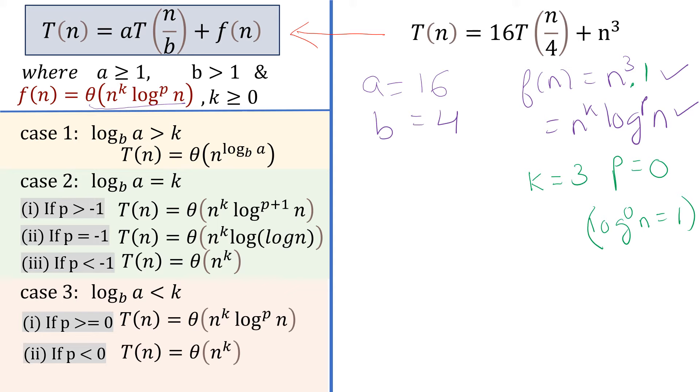Now we have a, b, k and p. Next you have to find log_b a, which is log_4 16 equals 2. Now compare log_b a and k. k is 3, log_b a is 2, therefore k is greater. It's very clear which case it belongs to. There are three cases: case one, case two, case three. Since 2 is less than 3, our question belongs to case three.